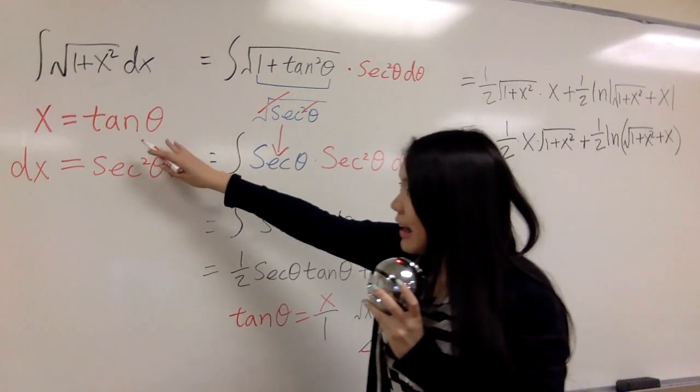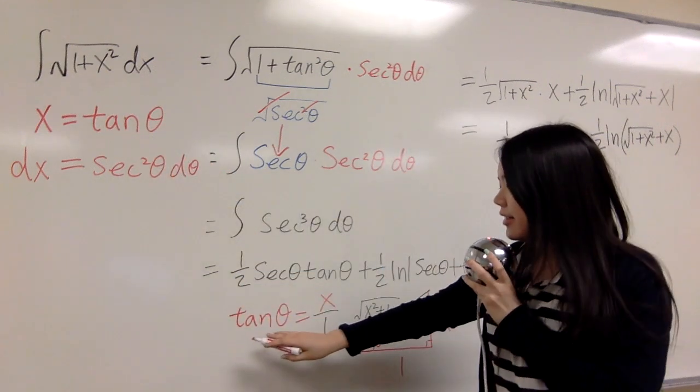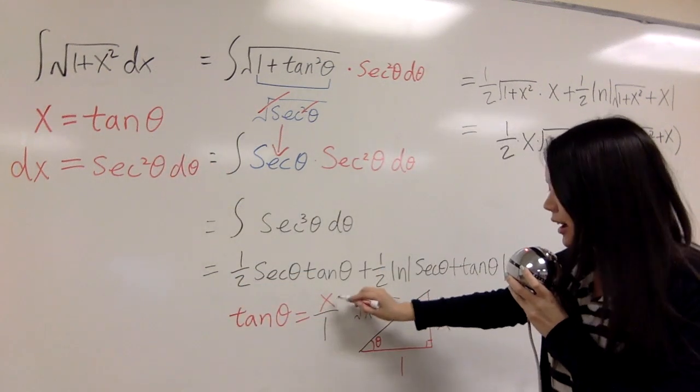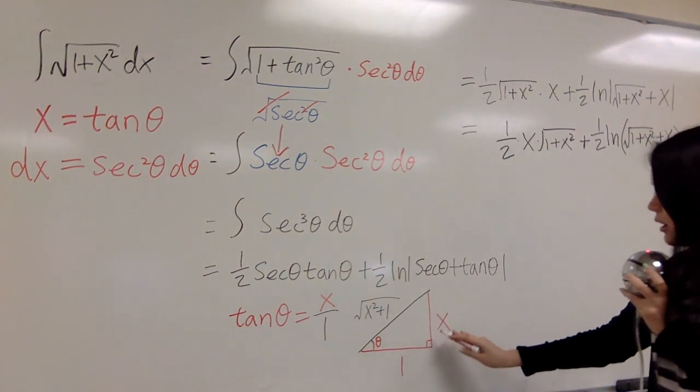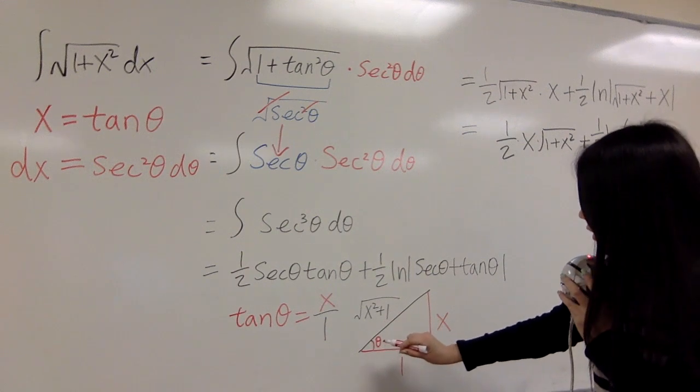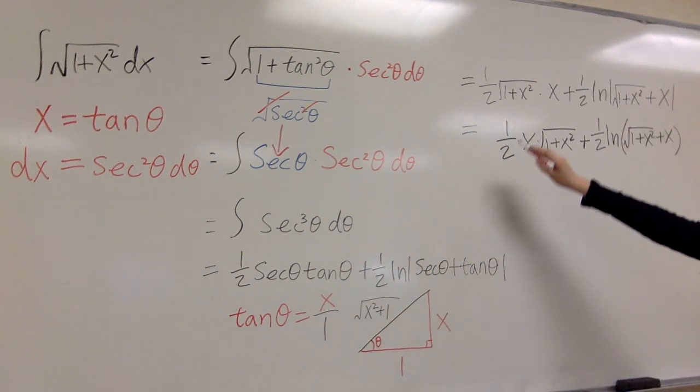And first we set x equals tangent theta. Now we can look at x over 1 and graph the triangle. And that's it. Put it back.